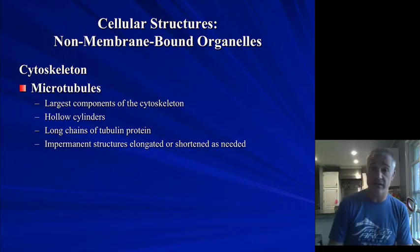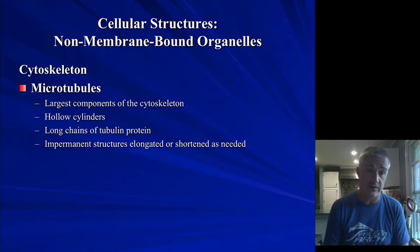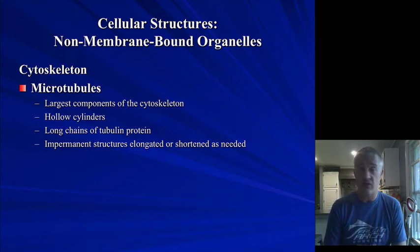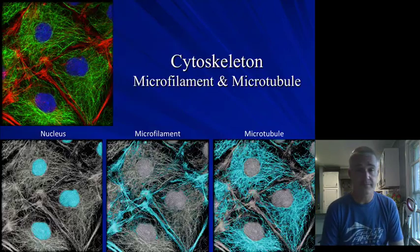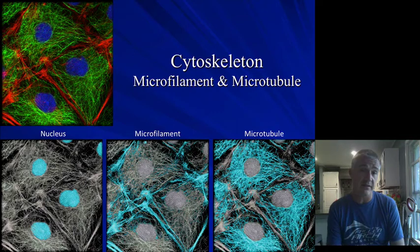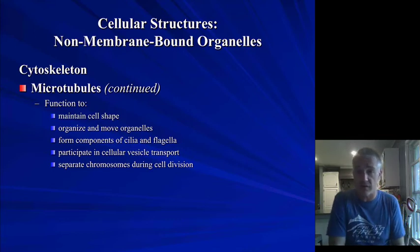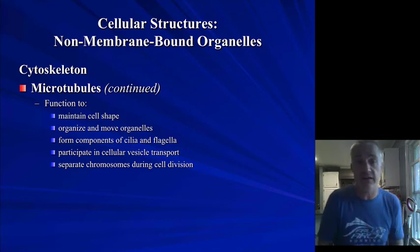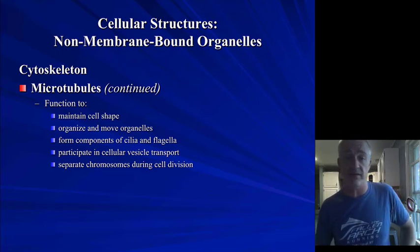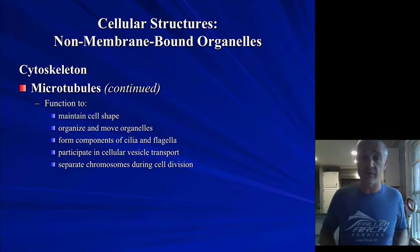Microtubules are the large ones — hollow cylinders that you also see inside cilia and flagella. They're made of the tubulin protein and can be changed somewhat based on need. They help hold the shape together and are a component of transport structures like cilia and flagella. They also help move different vesicles throughout the cell and are involved in moving the chromosomes during mitosis.